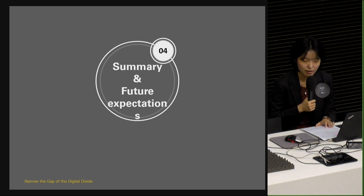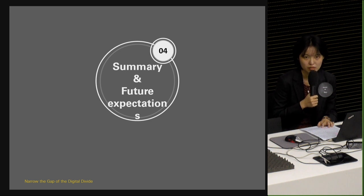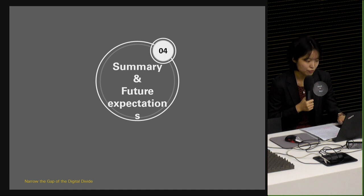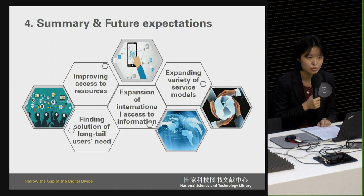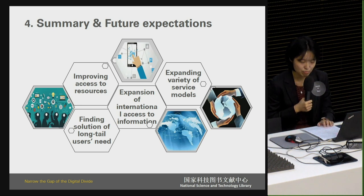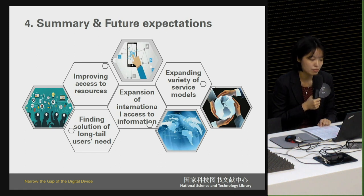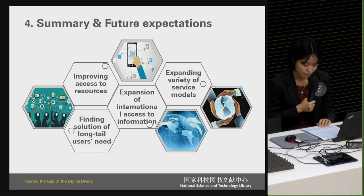NSTL contributes to narrowing the digital divide in mainland China in three main areas and tries to close the international gap, strongly supporting domestic science and technology development. NSTL has adopted diverse approaches to bridging the gaps and achieved some significant effects. For future expectations, NSTL will continue to improve access to resources for the public, especially for information-backward areas. Plans have already been made for certain areas such as Huizhou and Shanxi — some Midwest cities in China. Other planned activities include finding solutions for long-tail users' needs, expansion of international access to information, and expanding varieties of service models for different user groups.